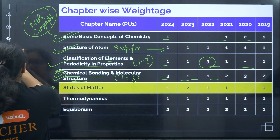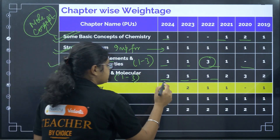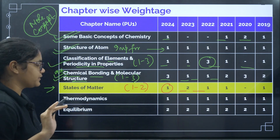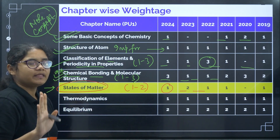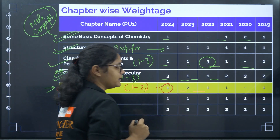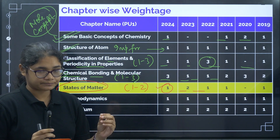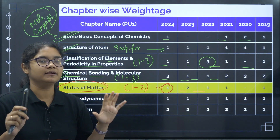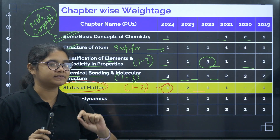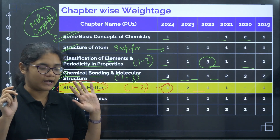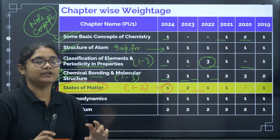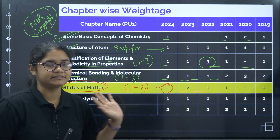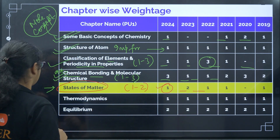State of Matter had an average of one to two questions, but the good news is this chapter is deleted. You might ask how it was asked in 2024 — yes, a question was asked, but questions from out-of-syllabus chapters were discarded and not considered for evaluation. So you can trust 100% that you only need to study chapters that are in the syllabus. There is no need to touch deleted chapters at all.